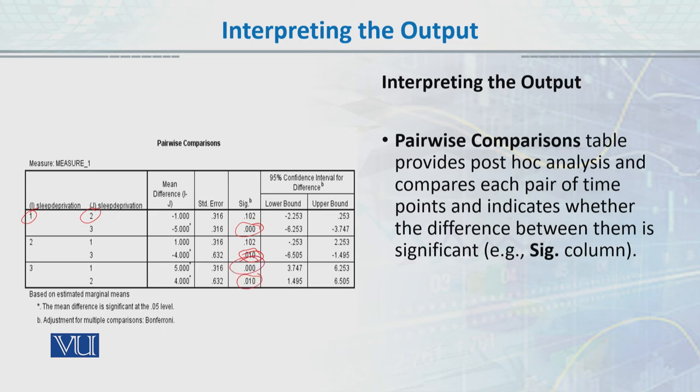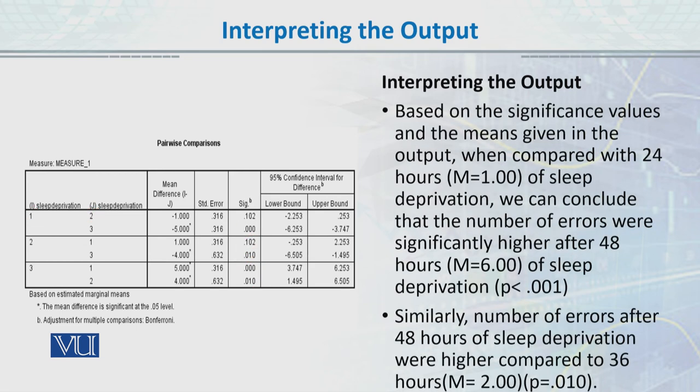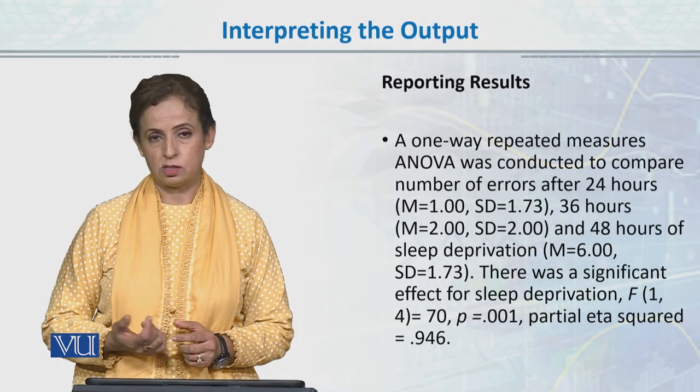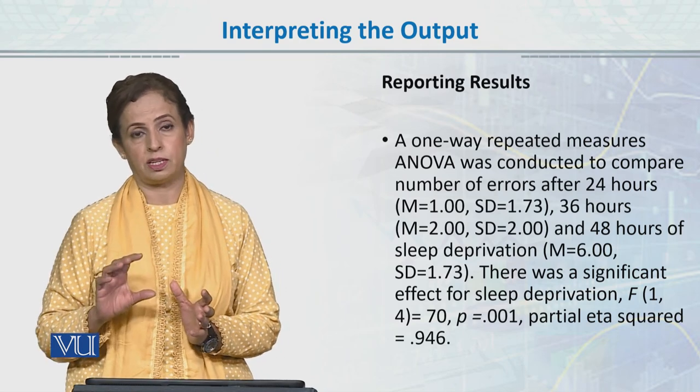The third condition - 48 hours of deprivation - is significantly different from the first condition and the second condition. In the pairwise comparison, you will look for the column labeled 'Sig' where it has made the pairwise comparison. You will look for values which are less than 0.05 to claim that the number of errors is significantly different from 24 hours and 36 hours.